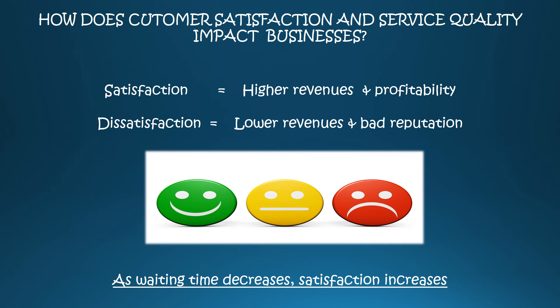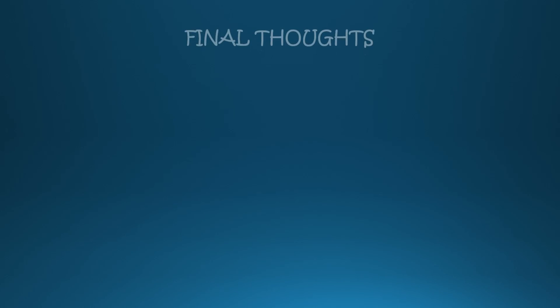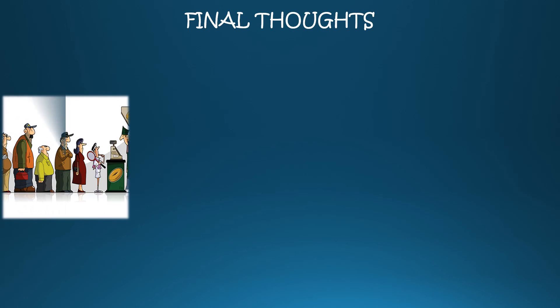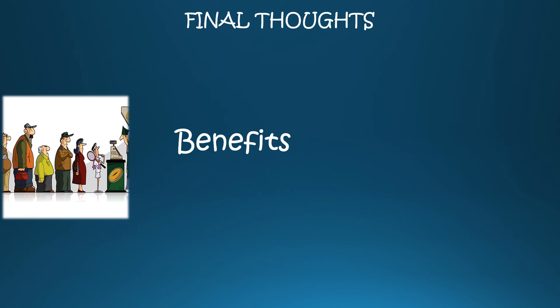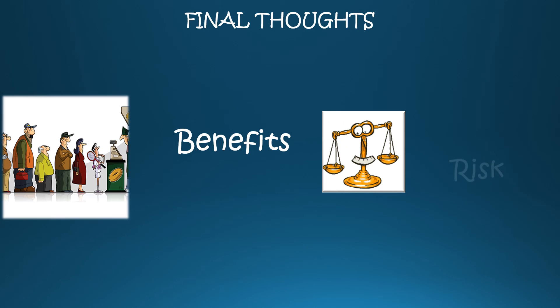Simply put, as waiting time decreases, satisfaction increases. Queuing is the irritating task of waiting in line, and queuing theory is the study and process of improving that wait time. Single line multiple server is the most efficient; however, depending on perception, multiple line multiple server may be more satisfying to the customer. The purpose of queuing theory is to better understand the process of waiting and shorten those wait times, helping achieve faster customer service by weighing the benefits of paying more workers and whether it will increase profit enough to be beneficial. Thank you for joining Team One's presentation on queuing theory.